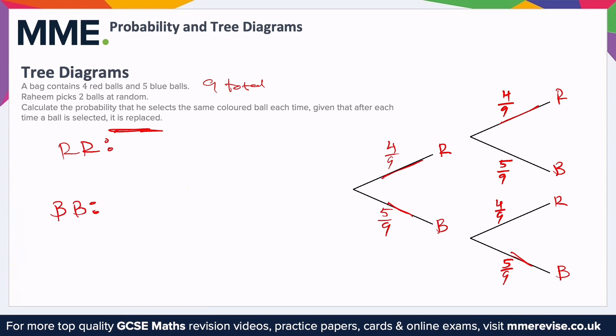Focusing on red then red first: the probability of getting a red on the first draw is four ninths. Then on the second we want a red again, so we use the AND rule — it's red and a red. So we do four ninths times four ninths. Working that out: four times four is 16 on top, nine times nine is 81 on the bottom, giving 16 over 81.